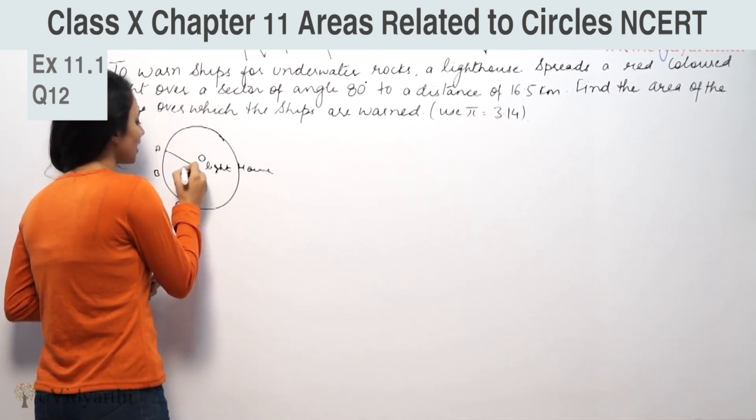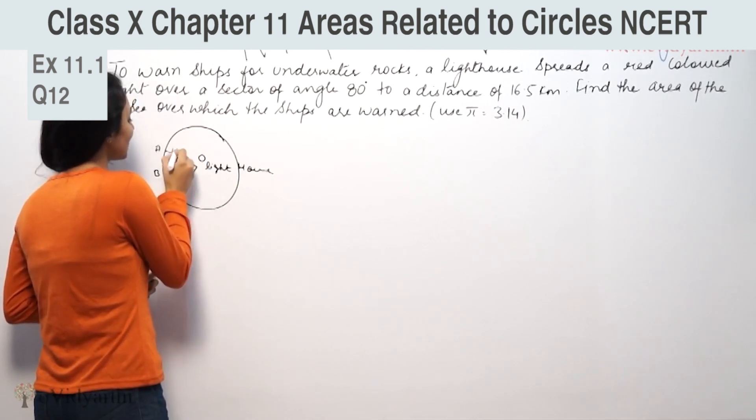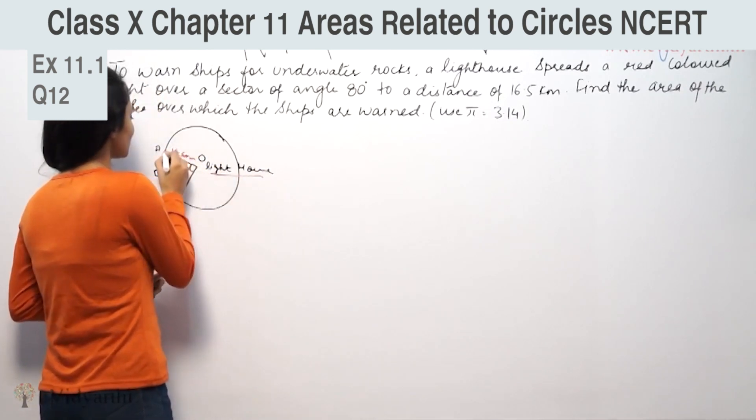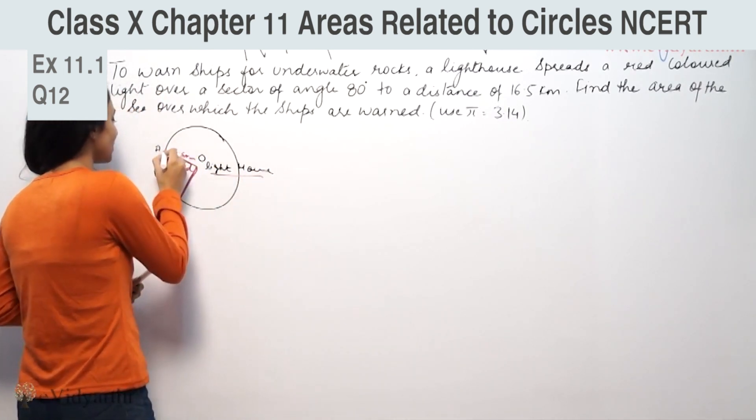The area of the sector has an angle of 80 degrees and the distance is 16.5 km. So we want to find the area covered by this.